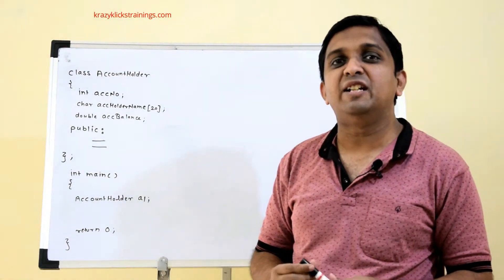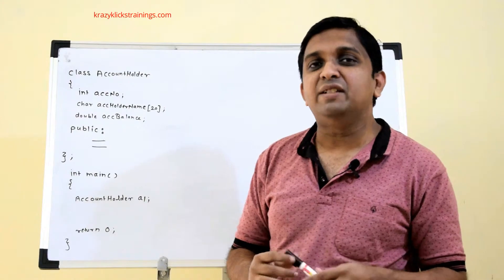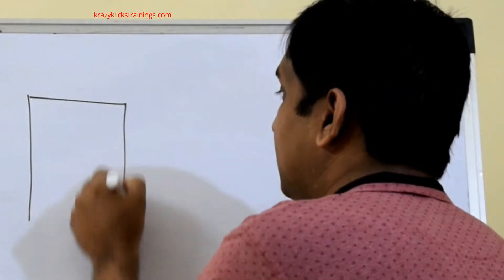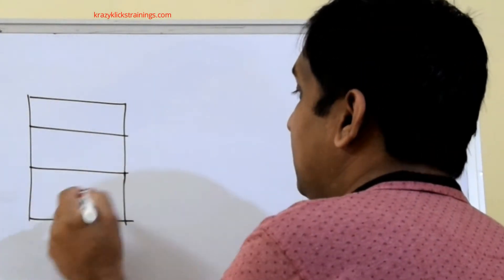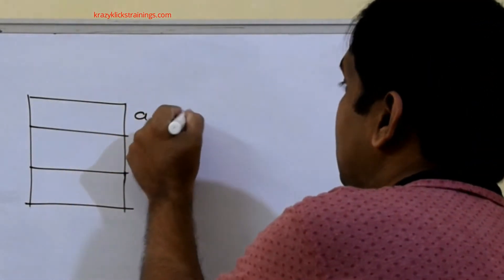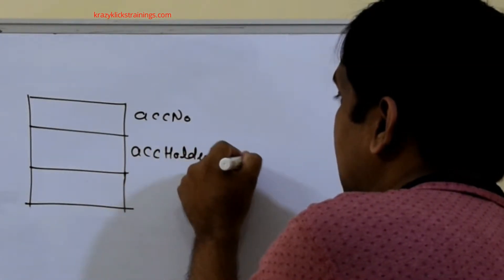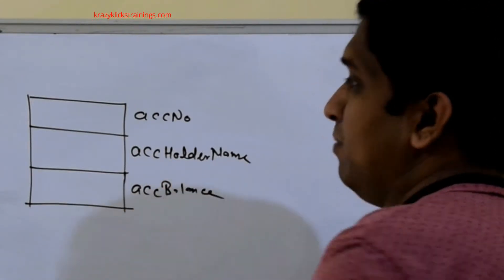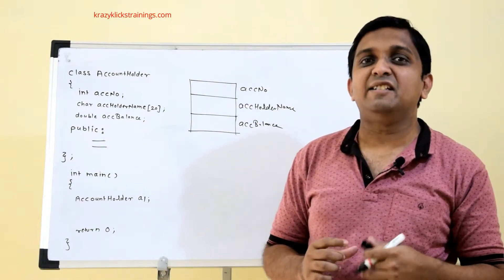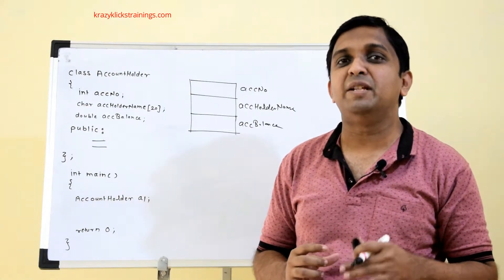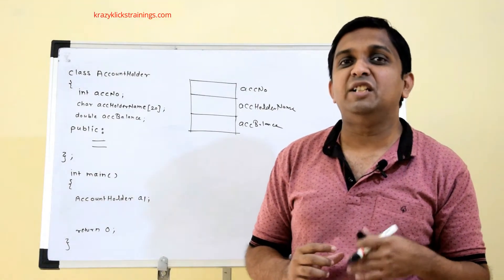In the main function I created one object a1 of AccountHolder class. When a1 is declared, the compiler allocates 28 bytes of memory containing account number, account holder name, and account balance — initialized to garbage values. Suppose I want to put meaningful values immediately after the object is declared, that is, I want to initialize the a1 object.